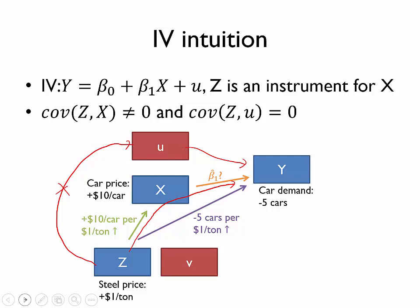So now if we wanted to estimate Beta 1 — the impact of the price of a car on the demand for cars — we might reasonably note that these two changes, the change in demand and the change in the price of a car, were both caused by the same exogenous factor. We might attribute that five car decrease in demand exclusively to that ten dollar per car increase in price. In other words, we might estimate Beta 1 as follows: we divide that five car decrease caused by the one dollar per ton increase in the price of steel, by the ten dollar per car increase in the price of a car that we think was caused by that same event. This gives us an estimate of Beta 1 hat — a decrease of 0.5 cars for every one dollar increase in the price of a car.